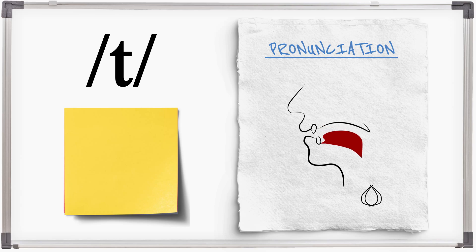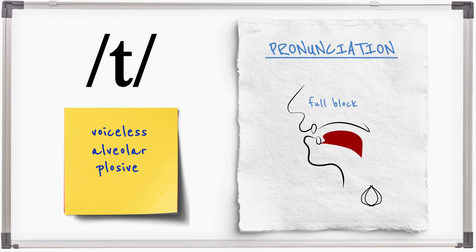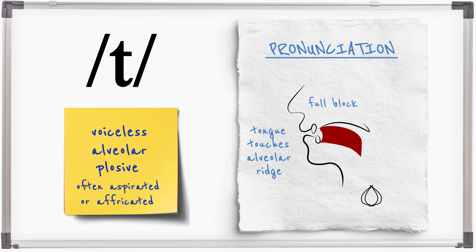T is a voiceless alveolar plosive made by touching the tongue on the alveolar ridge and blocking the flow of air completely. It is normally then released by withdrawing the tongue. T is often released with aspiration, which is a puff of air, or affrication, which is a small friction sound. T, there is no vibration throughout.